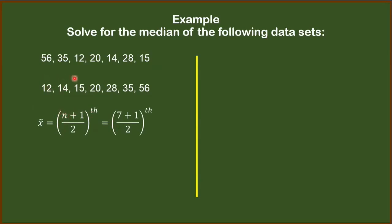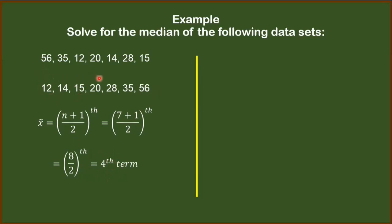Here, n stands for the number of data involved. We count: 1, 2, 3, 4, 5, 6, 7. That's why we substitute 7 for n. 7 plus 1 is 8, divided by 2 is 4. Meaning the 4th term will be our median — but this is not our answer yet. The formula gives us the position. We go back to the dataset and count: 1st, 2nd, 3rd, 4th. The 4th term is 20, so 20 is our median.